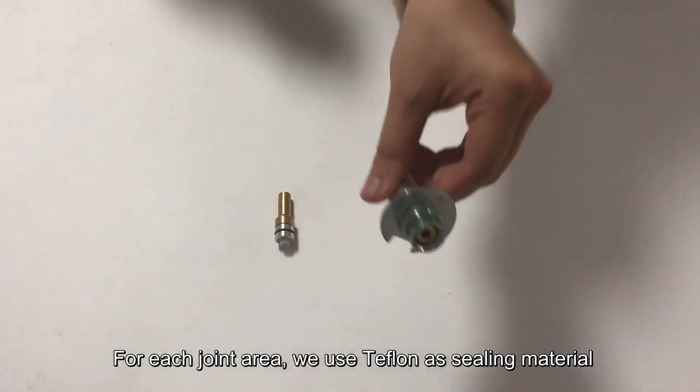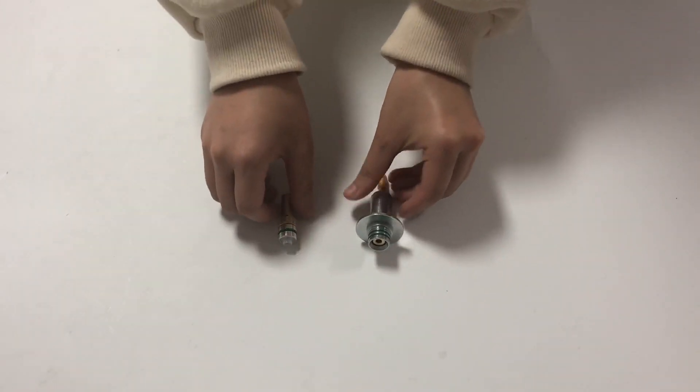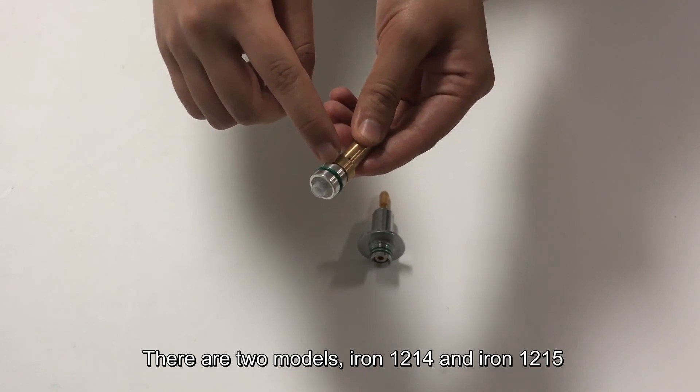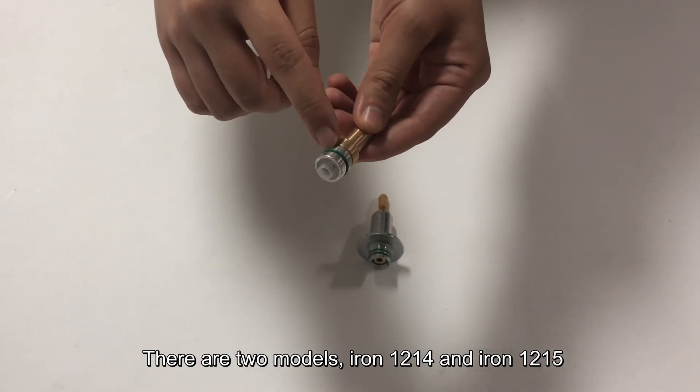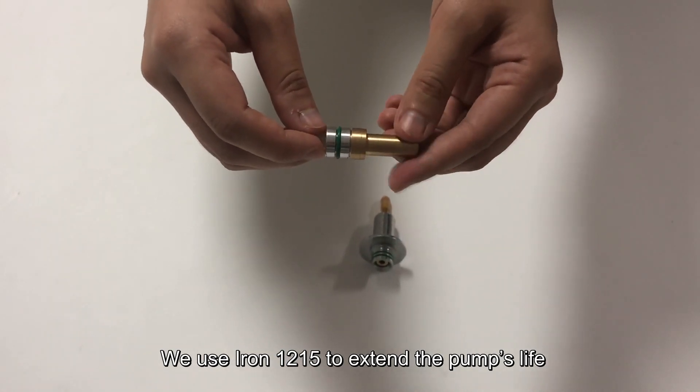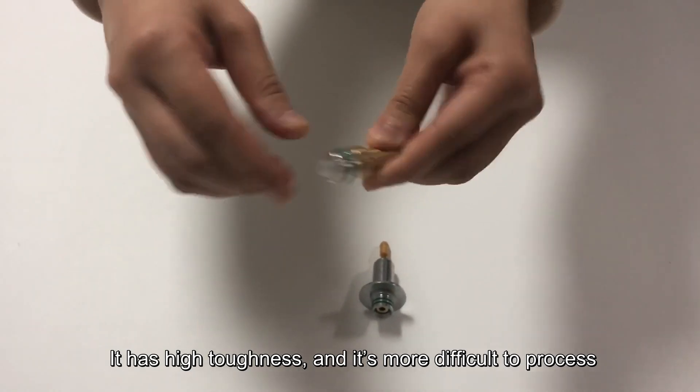For each joint area, we use teflon as sealing material. The iron core is made of pure iron. There are two models, iron 1214 and iron 1215. We use iron 1215 to extend the pump's life. It has high toughness and it's more difficult to process.